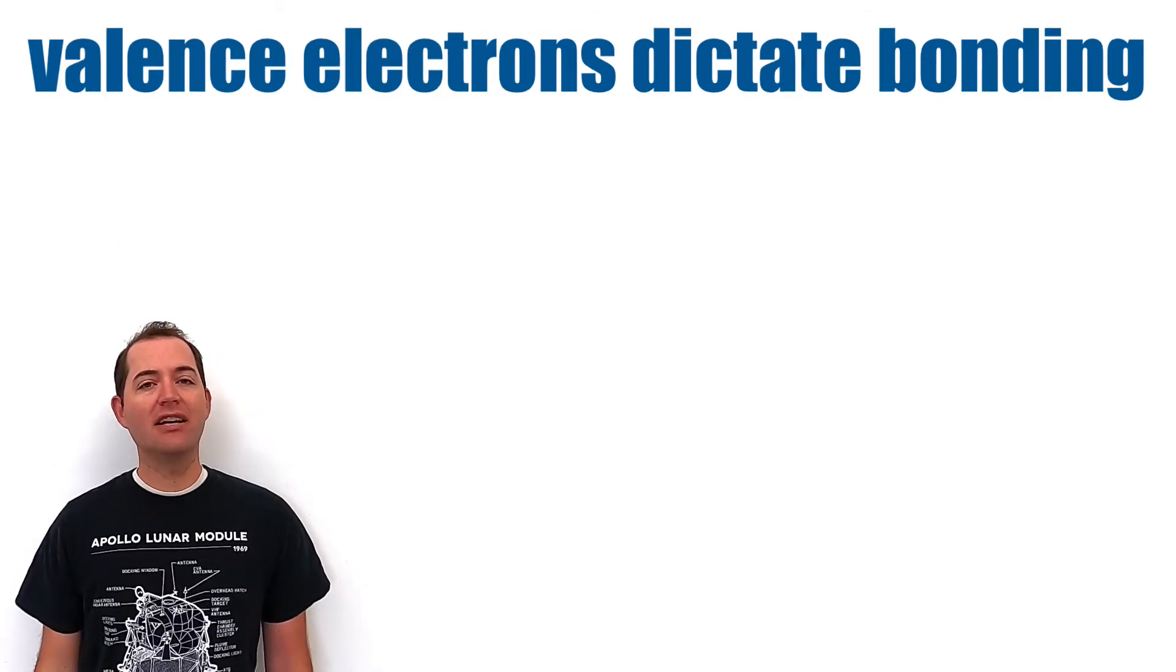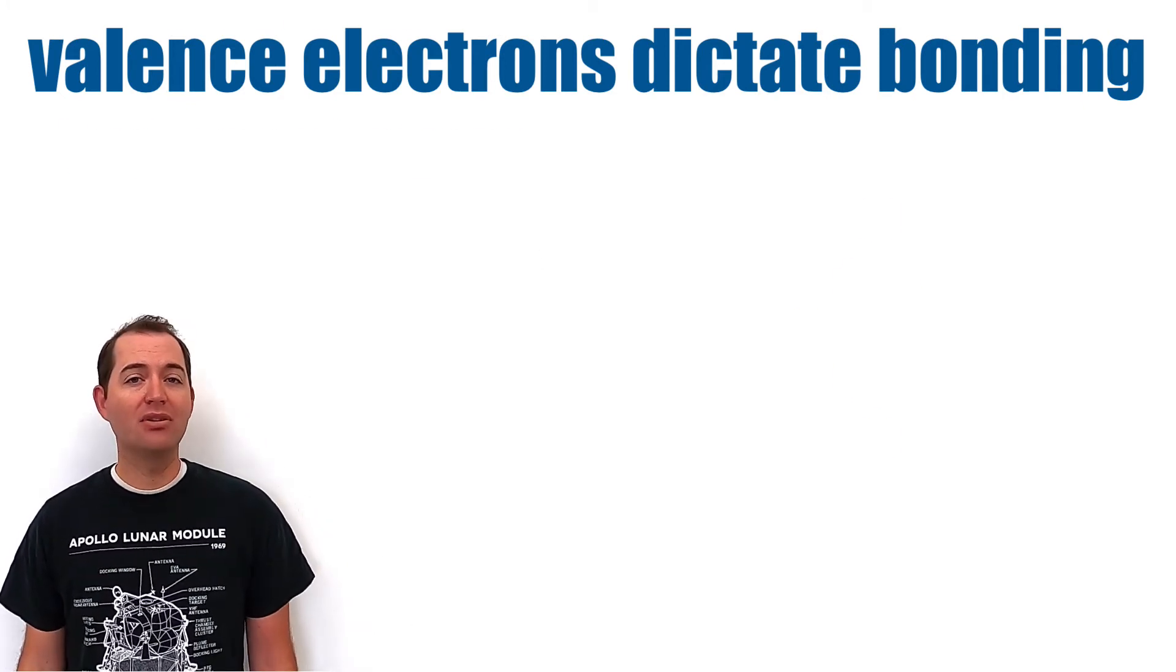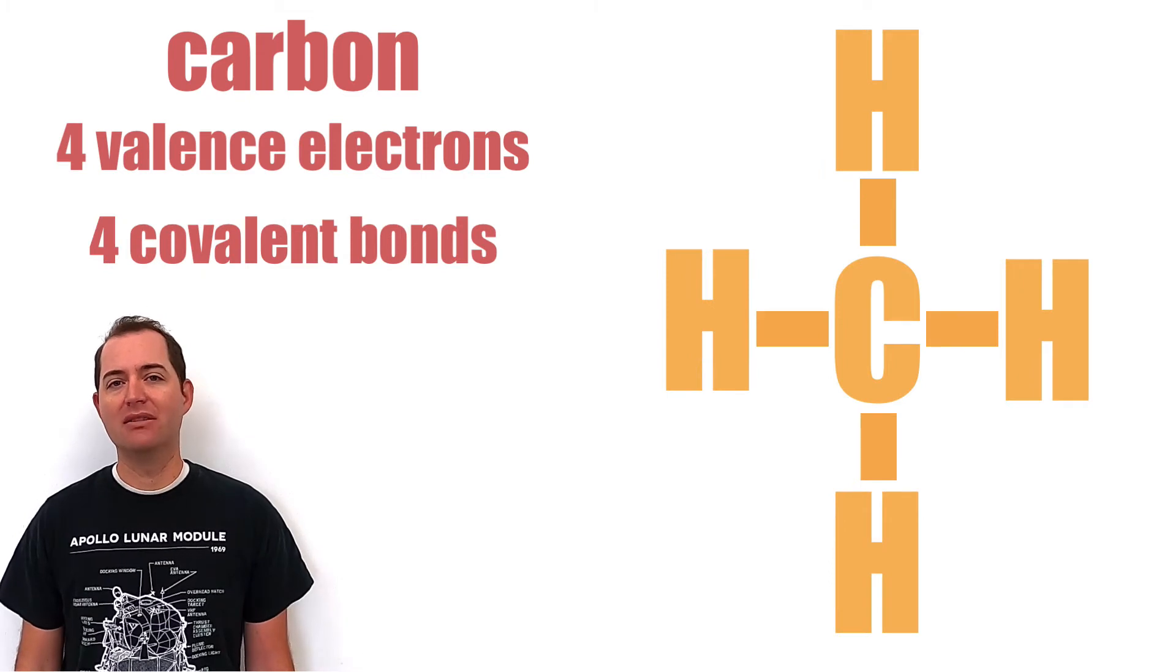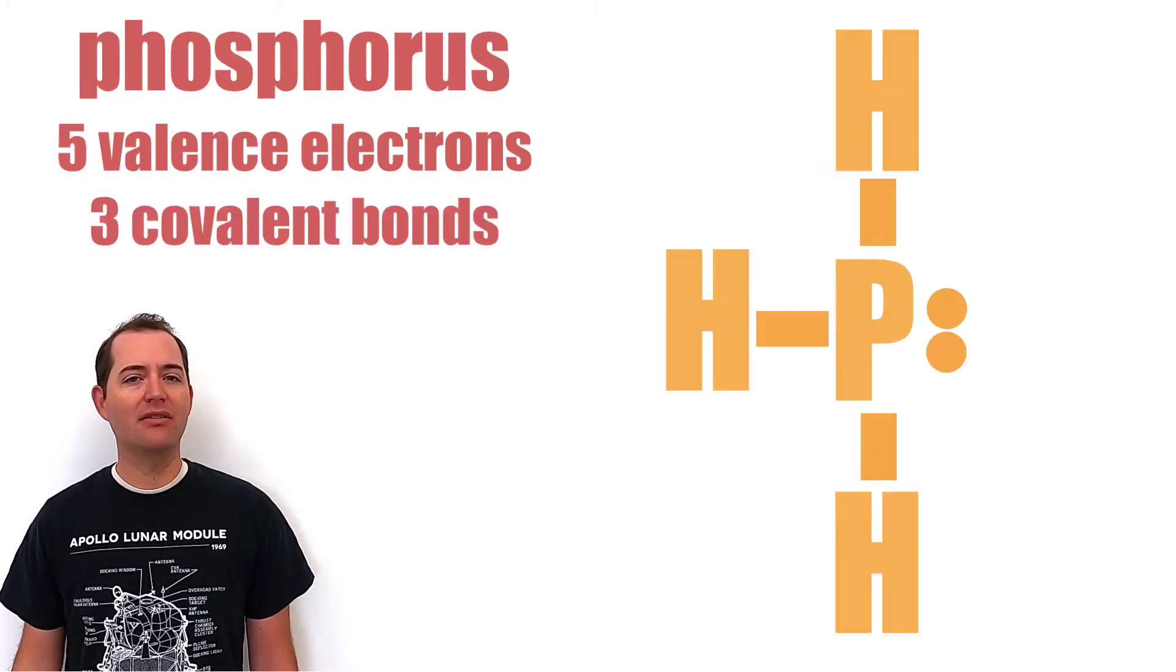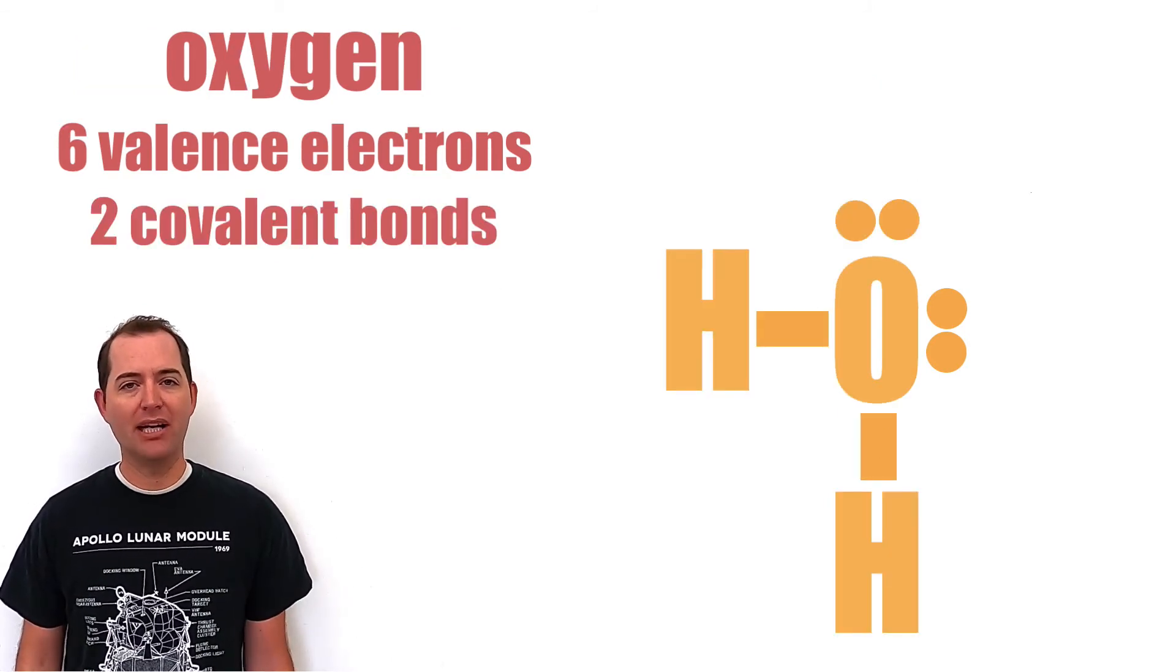The number of valence electrons in an element will dictate the number of bonds that are formed. For example, carbon with four valence electrons likes to make four covalent bonds, and phosphorus with five valence electrons likes to make three bonds, and oxygen likes to make two covalent bonds with two lone pairs.